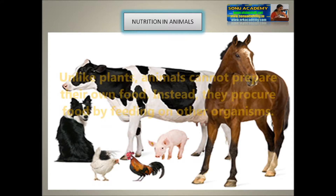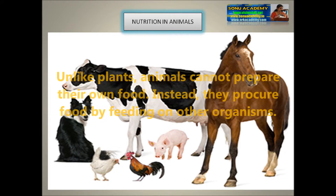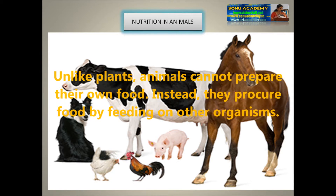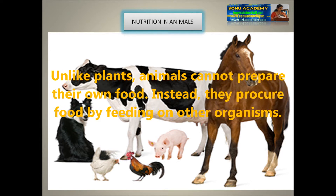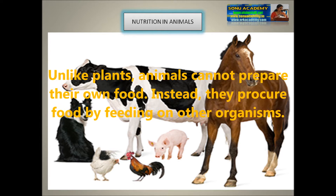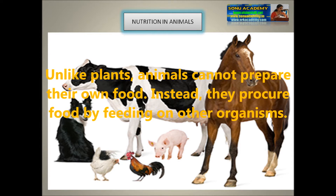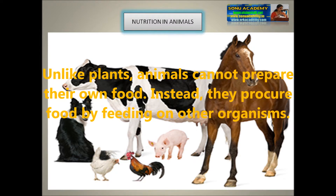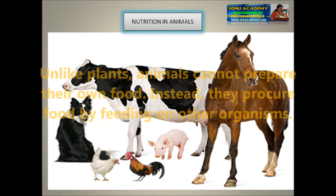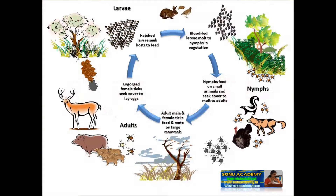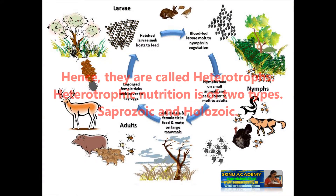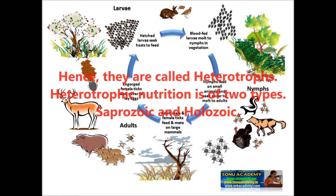Children, unlike plants, animals cannot prepare their own food. They obtain food by feeding on other organisms. Hence, they are called heterotrophs.